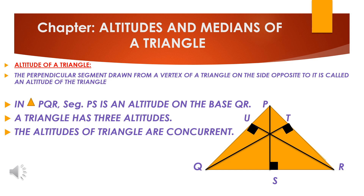We have done this in the previous classes. I will remind you again that if three or more lines pass through the same point, then they are called concurrent lines. So here you can see altitudes are passing through the same point, so we can call them concurrent lines.